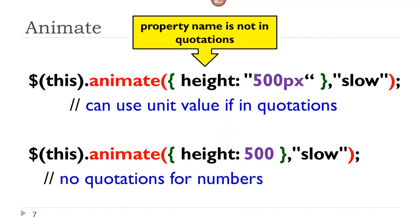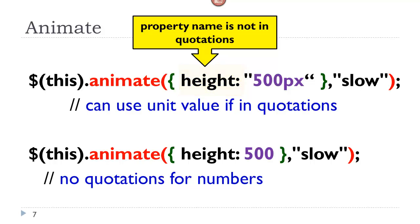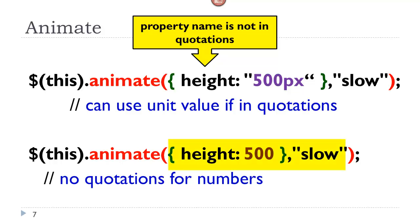Let's take a look at the syntax. Here we have thisSelector.animate. Notice where the animate opens and closes. If we were to animate the height property slowly, notice the property name is not in quotations. Because we have the unit of measure PX being used, everything would be in quotations since there is a literal in there. If you are using the unit value, it needs to be in quotations. However, if we are just using a number, there are no quotations for that number.